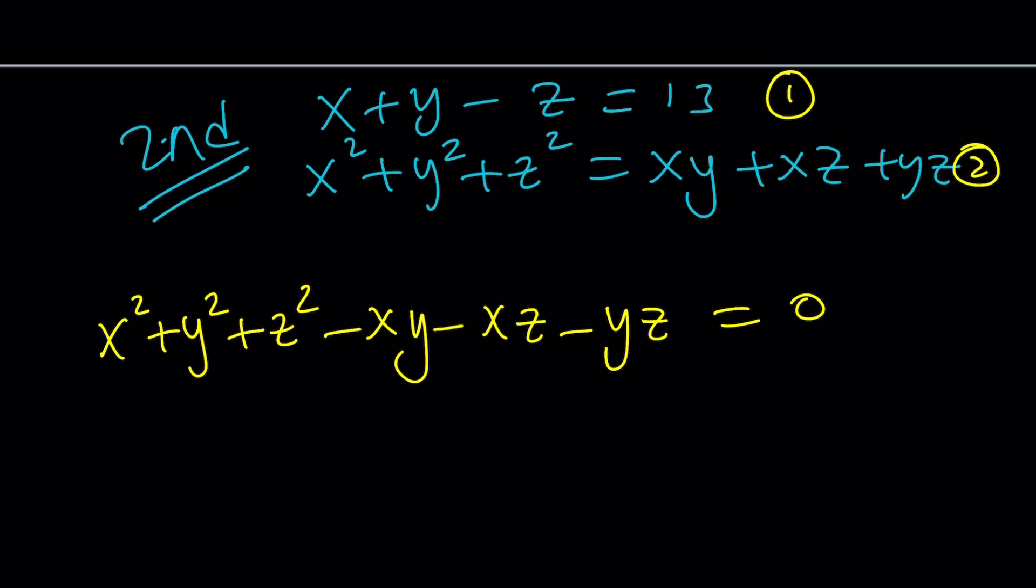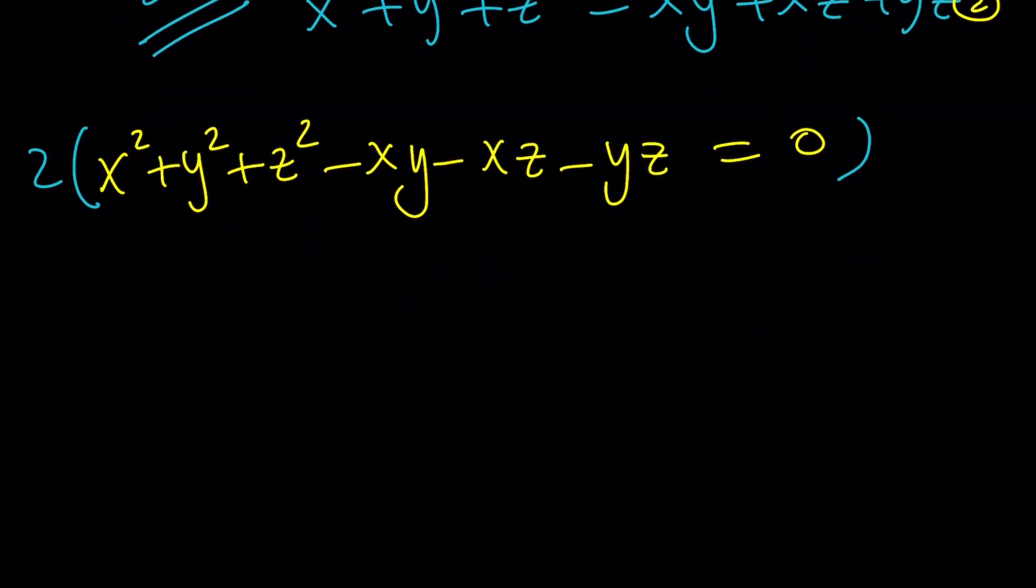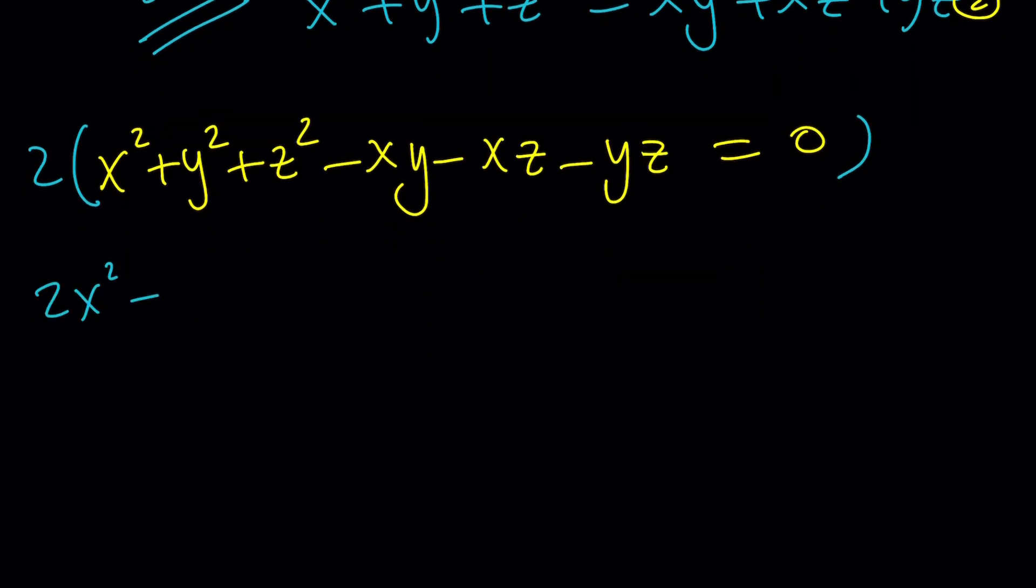Here's what we're going to do. We're going to double this whole thing. And, of course, it's going to be zero still. So, this gives us 2x squared plus 2y squared plus 2z squared minus 2xy minus 2xz minus 2yz. By the way, we could have done this without doubling, but doubling makes it easier. Trust me on that.